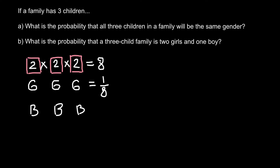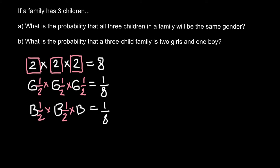Another way to solve this problem: the probability that the first child is a girl is one half. The probability that the second child is also a girl is one half — one out of two combinations gives us a girl. The probability that the third child is a girl is also one half. When we multiply all these numbers we get one eighth. The same rule applies every time — because the gender of each child is an independent probability, not dependent on the gender of the previous child.